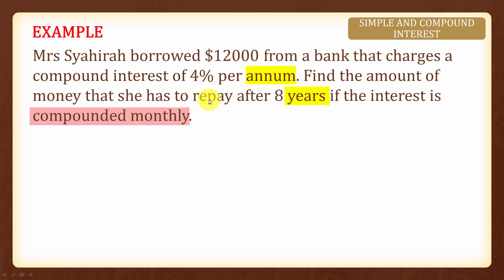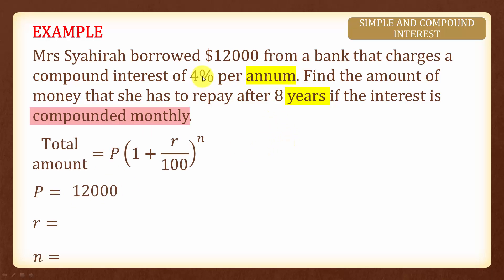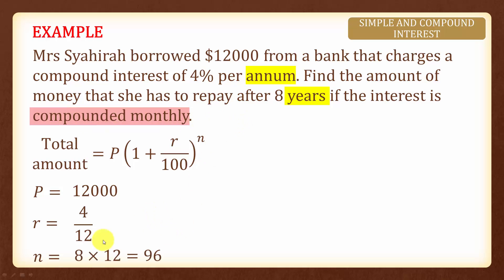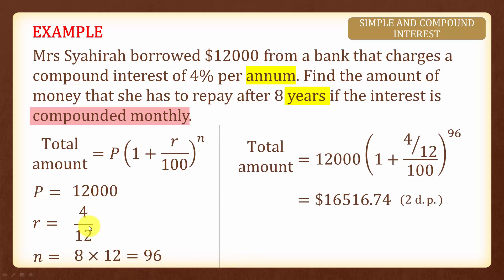In this example, the interest is compounded monthly, the compound interest is four percent per annum, and we need to find the amount she has to repay after eight years. In this case we have to convert both — the rate and the time period — to months. The principal is twelve thousand dollars. The interest rate is four over twelve percent per month. In eight years compounded monthly, we compound it eight times twelve, which is ninety-six times. Substituting into the formula gives us the total amount.